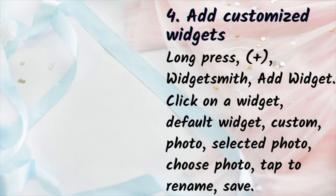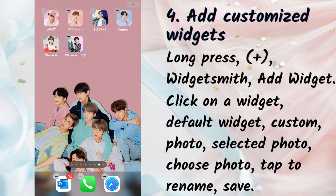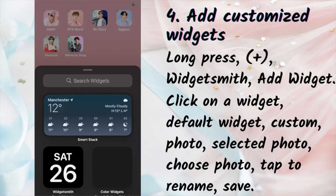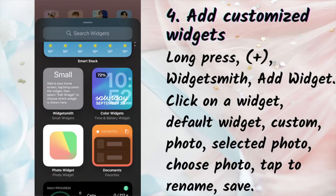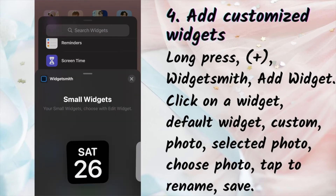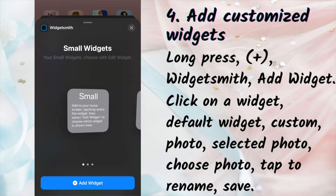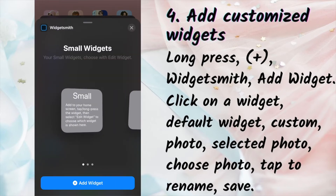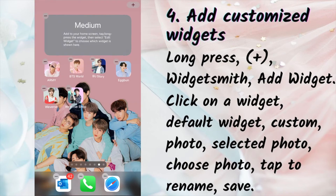Next, customize and organize your home screens using widgets. The app you'll need for this is called WidgetSmith. If you don't have it, you can download it from the App Store. Long press the home screen, click the plus button on the top right corner, and scroll all the way down to WidgetSmith. You can choose between small, medium, and large widgets.